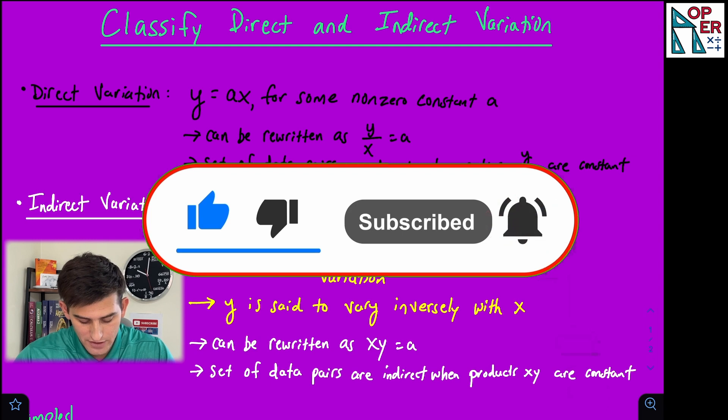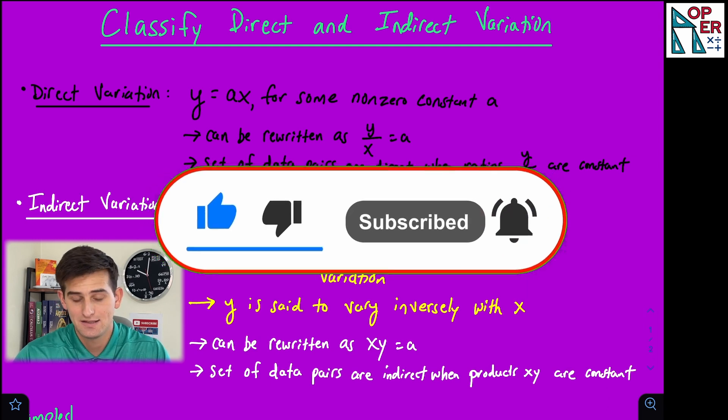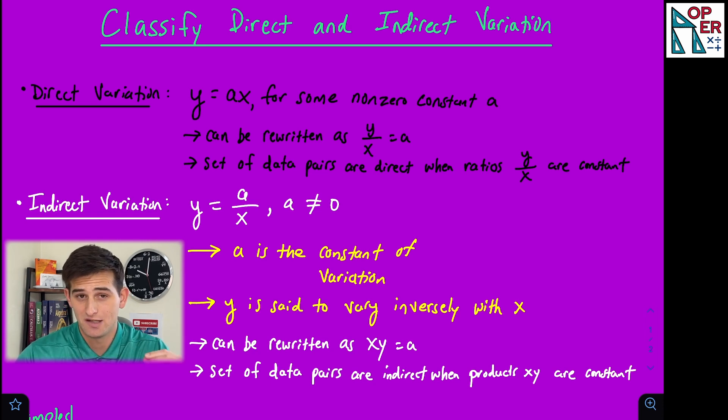Starting off with direct variation, we have the equation y equals a times x for some non-zero constant a. So that's the equation we want to focus on. It can be rewritten as y over x equals a, and we can use that when we're trying to identify the type of variation from a table of values.